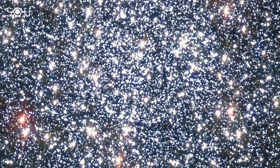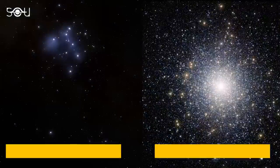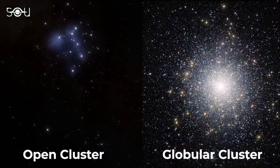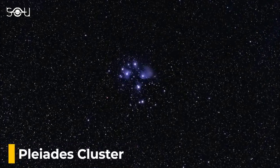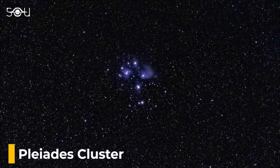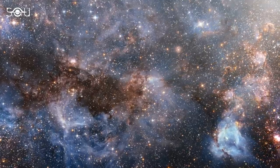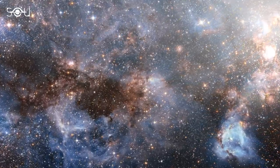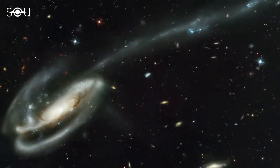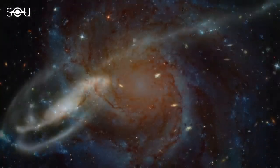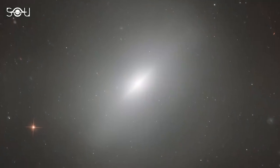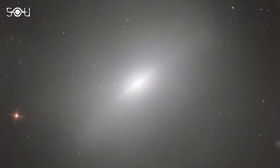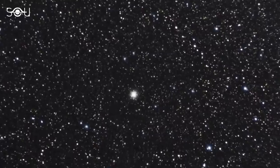Star clusters can contain hundreds, thousands, or even millions of stars. They are divided into two main categories: open and globular. Open clusters are loosely bound groups of a few tens to a few hundreds of stars. They are unstable, and their constituent stars might disperse after a few million years. That's why open clusters are mostly found in irregular and spiral galaxies actively forming stars, but not in elliptical galaxies whose star formation rate is negligible.